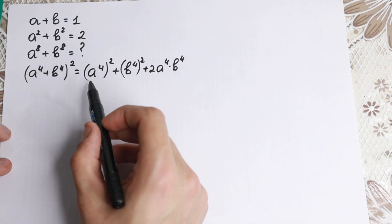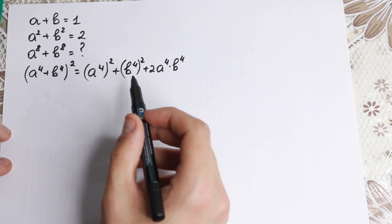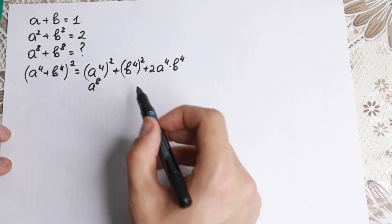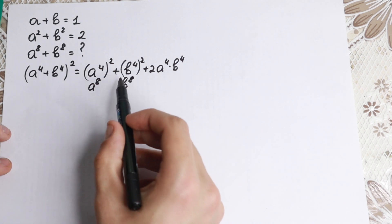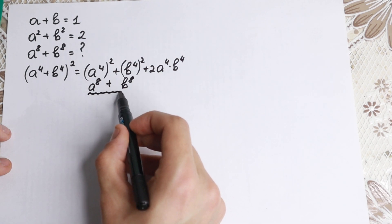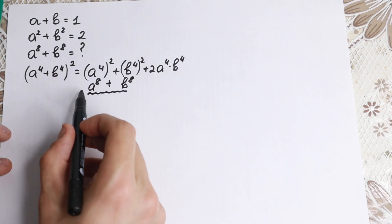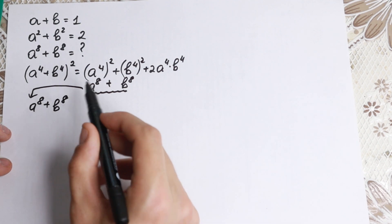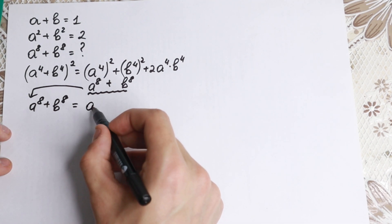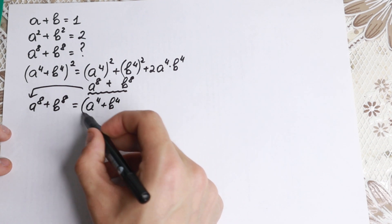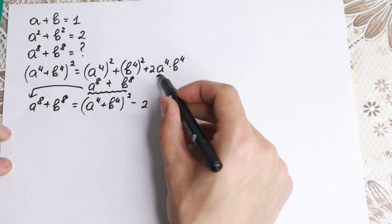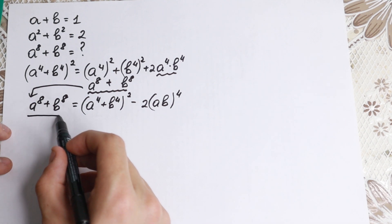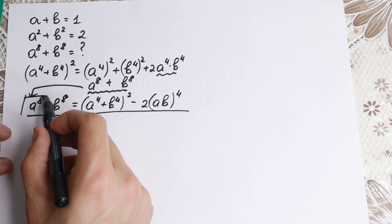If we look closely, a to the fourth squared is a to the eighth power, and b to the fourth squared is b to the eighth. So we can express the sum from this formula: a to the eighth plus b to the eighth equals a to the fourth plus b to the fourth, all squared, minus 2 times ab to the fourth power. This is the main step and the key rule we really need here.